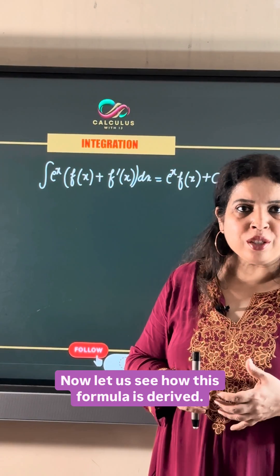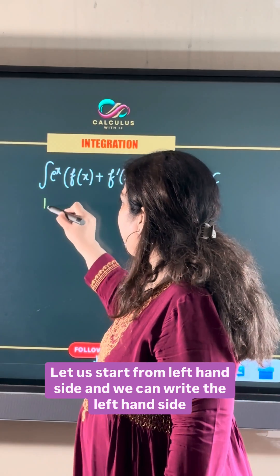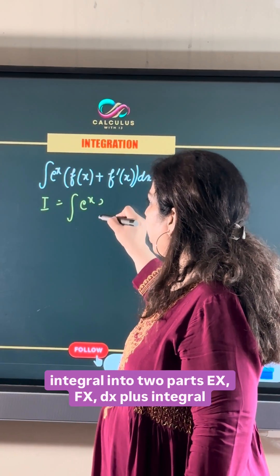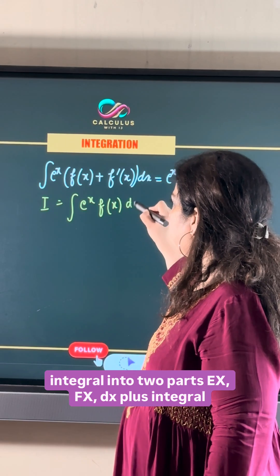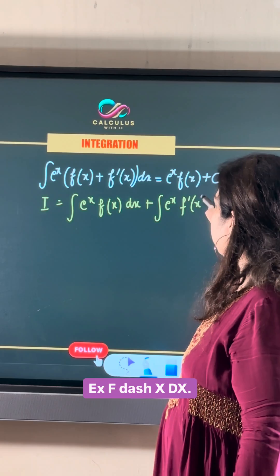Now let us see how this formula is derived. Let us start from left hand side and we can write the left hand side integral into two parts: e^x·f(x)dx plus integral e^x·f'(x)dx.